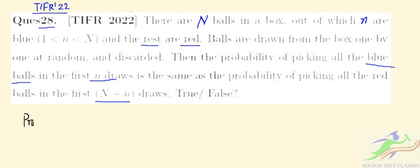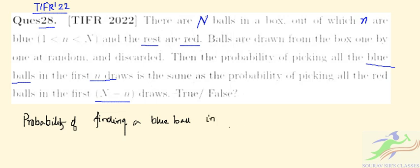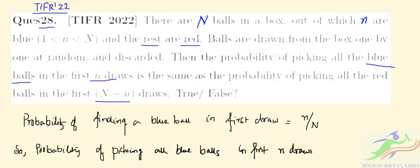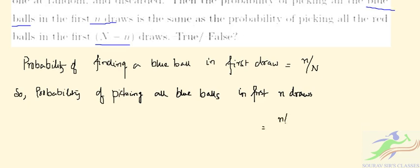So the probability of finding a blue ball in the first draw will be small n divided by capital N. Now, the probability of picking all the blue balls in the first n draws — in the numerator it will be n, n minus 1, n minus 2, down to 1.